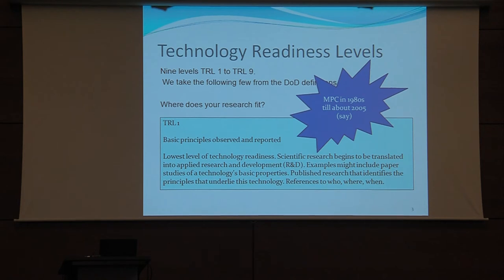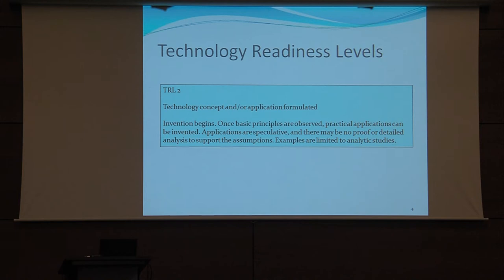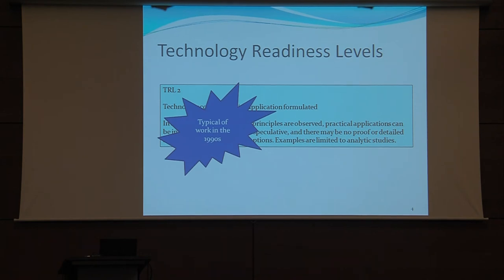TRL level one is kind of MPC in about the 1980s to 2005 — not actually doing anything, but thinking about what we could do with this technology. TRL level two is where concepts and applications are formulated, practical applications are invented but not done, and examples are limited to analytic studies — typical of the 1990s, where you'd see papers saying we could use MPC to do healthcare data. TRL level three is proof of concept.